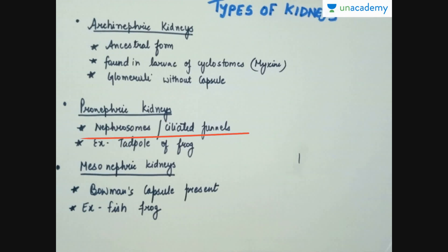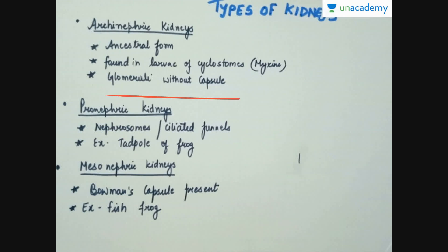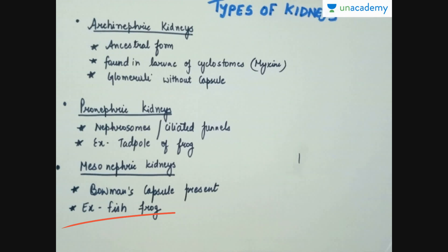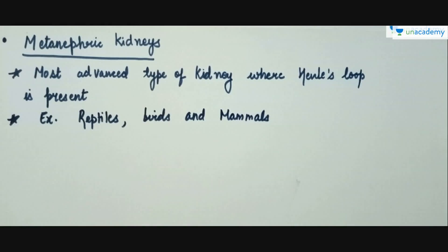Next are the mesonephric kidneys, which had the Bowman's capsule. Compared to archinephric kidneys, they were highly advanced because archinephric kidneys did not have capsules. Examples are fish and frog. Finally, the most advanced form are the metanephric kidneys, which have a proper Bowman's capsule, glomeruli, and the whole renal tubule with the Henle's loop also present. Examples are reptiles, birds, and mammals.